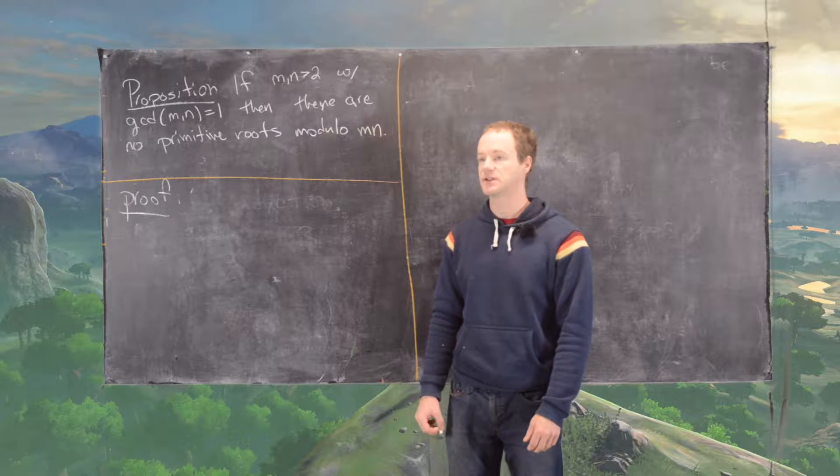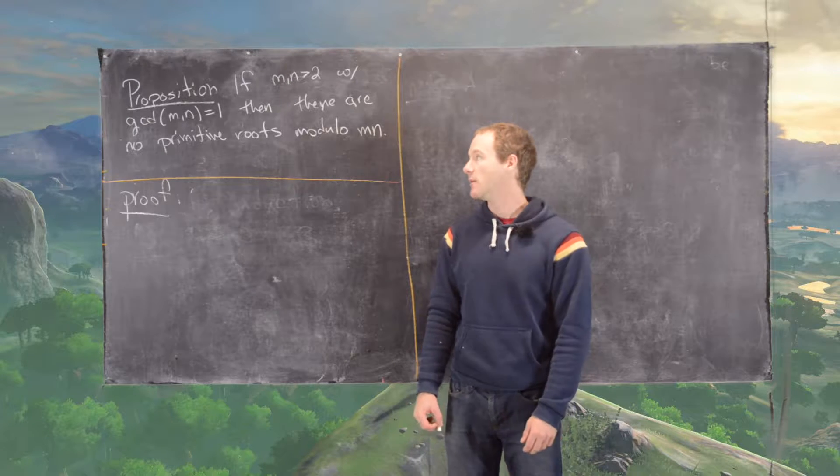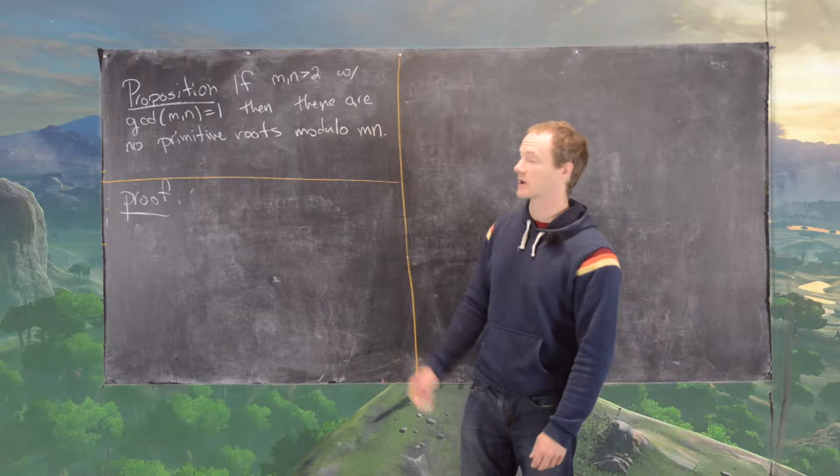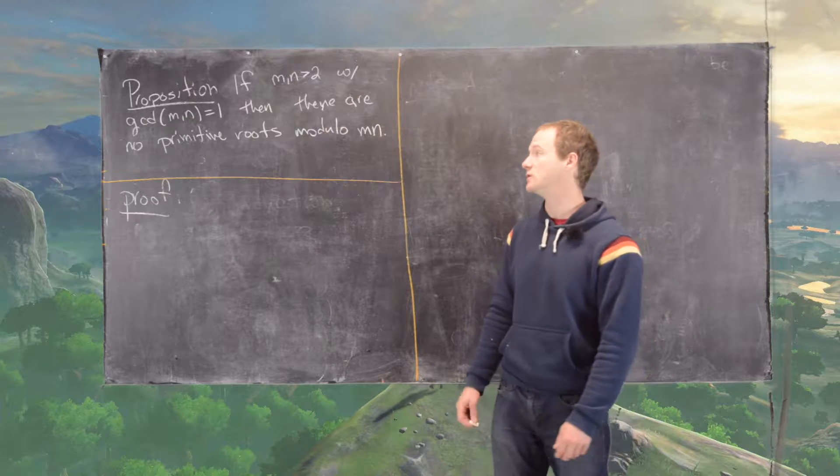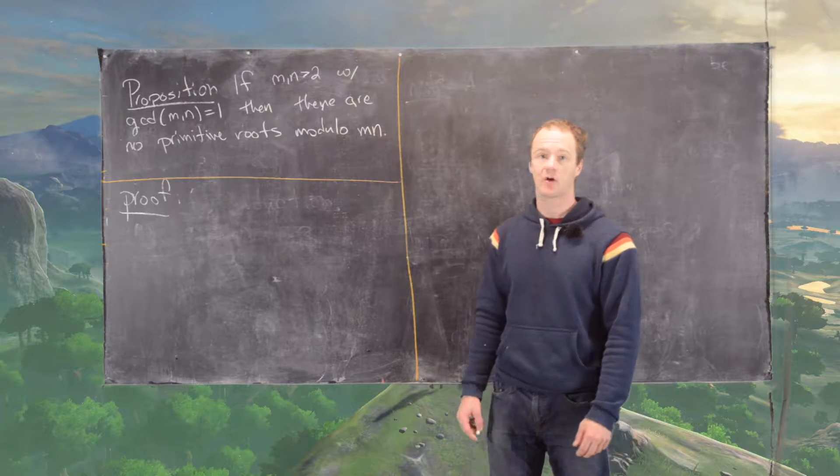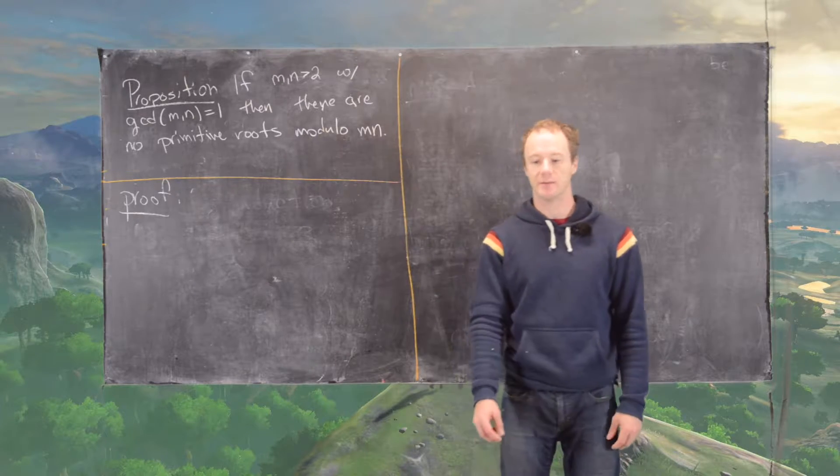We're continuing working up to classifying the natural numbers that have primitive roots and those that don't, and we're going to continue with this following proposition. If M and N are bigger than 2 where they are relatively prime, then there are no primitive roots modulo M times N.